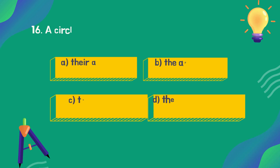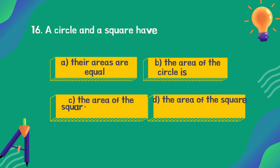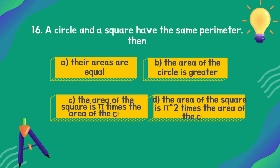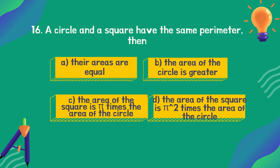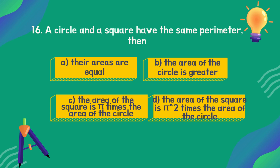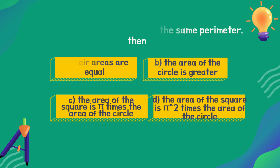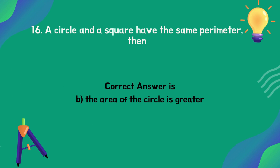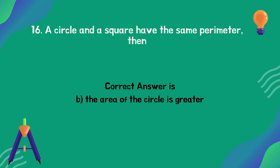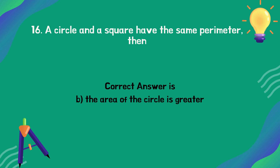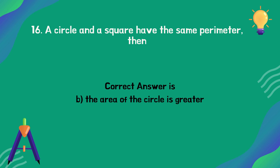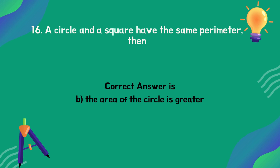A circle and a square have the same perimeter. What can be said about their areas? The correct answer is option B: the area of the circle is greater.